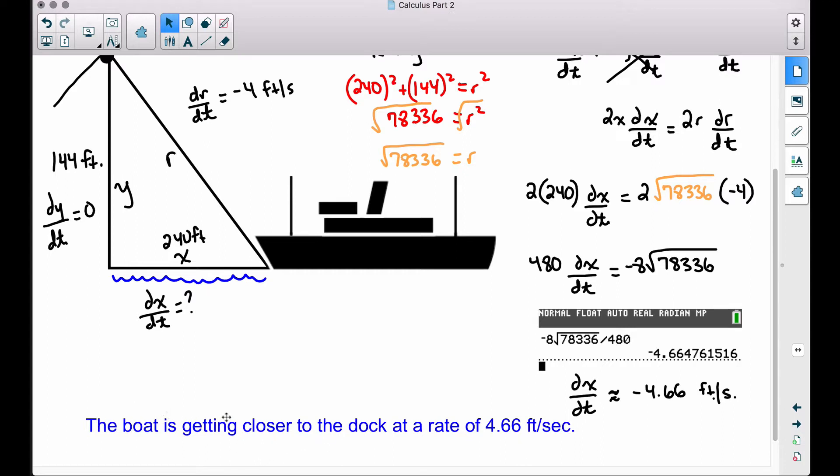The boat is getting closer to the dock, that's that negative, that length is getting shorter, at a rate of 4.66 feet per second. Notice I left off the negative here, because the way I'm wording this sentence is actually taking care of that negative. This length is getting shorter, which means the boat is getting closer. So be careful with how you write your answer as a complete sentence. That's a common mistake I see students make.